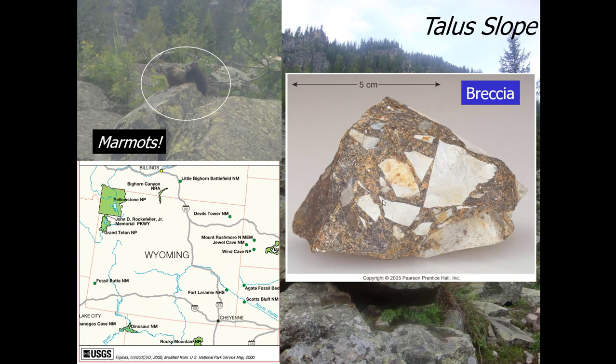The angular, poorly sorted particles of talus slopes are the same particles we see in the sedimentary rock breccia. Breccia is composed of poorly sorted particles that are cemented together and also angular in shape, with very sharp edges and a variety of grain sizes. Geologists of the future will be able to look at breccia in this location and determine that it was a talus slope based on the rocks found there.